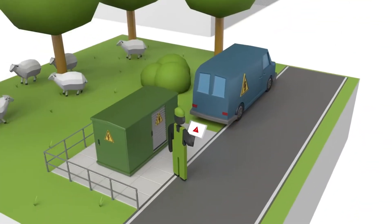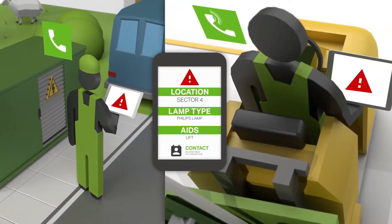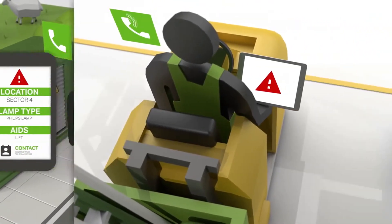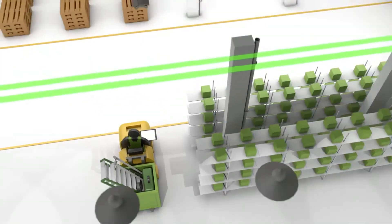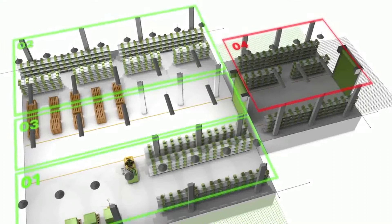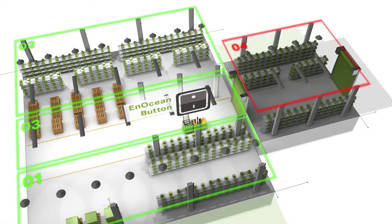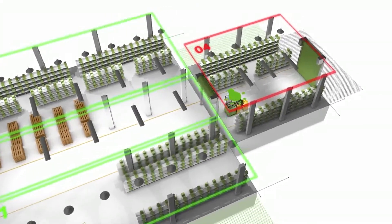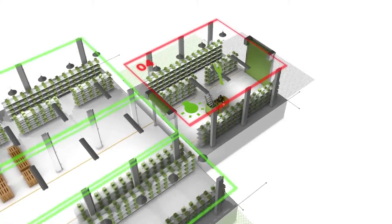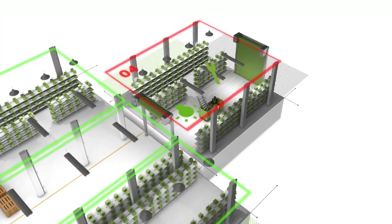If, for example, a lamp fails, the system displays a detailed error diagnosis. This tells you which lamp, the exact type, location, and at what height is defective and what you need for it. This means that you can perform maintenance and repairs yourself at any time of day or at night — not only saving time, but also the costs for a specialist.